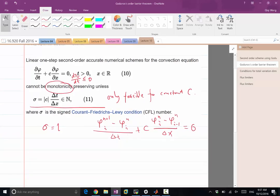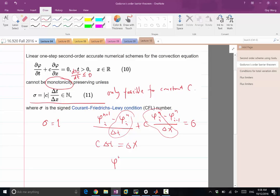So if sigma is equal to 1, that means my delta t times C is exactly equal to delta x, which means this term is going to cancel with this term. What I get is phi of n plus 1 i